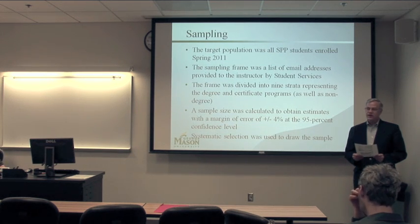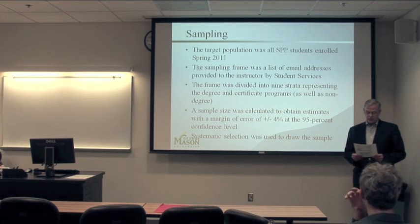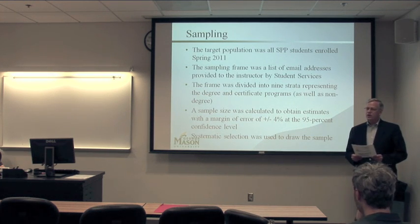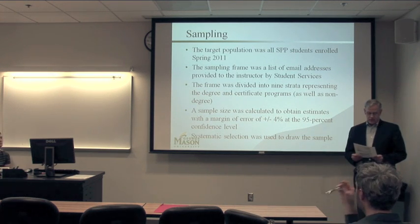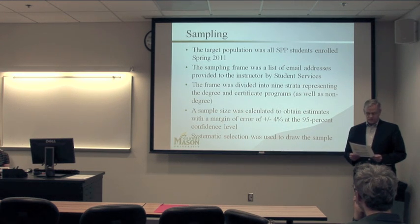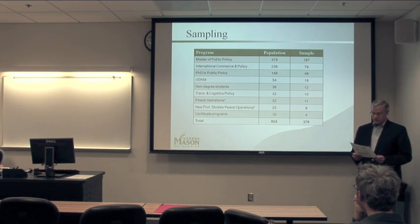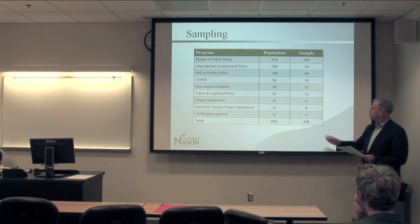The sample size was calculated to obtain estimates with plus or minus a 4% margin of error at the 95% confidence level. The sample size was adjusted with a finite population correction based on the size of the target population, and it was determined that the sample should include 378 elements. Using systematic selection, every third element was drawn based on a randomly generated number, with a circular selection process until the 378 elements were chosen. The final results of the sample selection and a comparison to the distribution of the target population are shown on this slide.